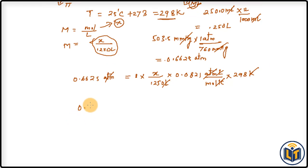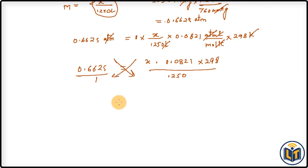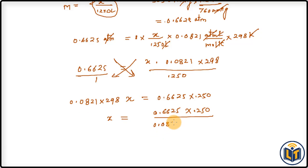Rearranging the equation: 0.6625 = X × 0.0821 × 298 / 0.250. By cross-multiplication: X = (0.6625 × 0.250) / (0.0821 × 298).